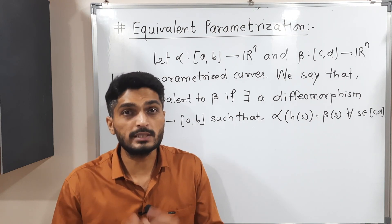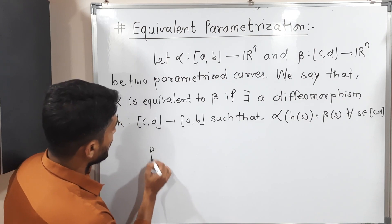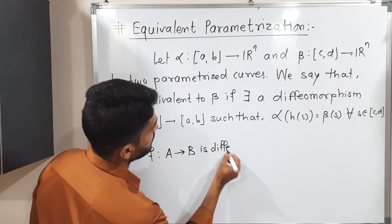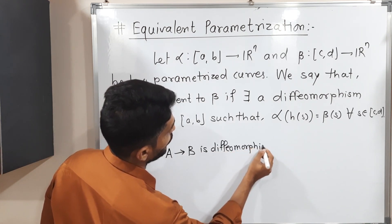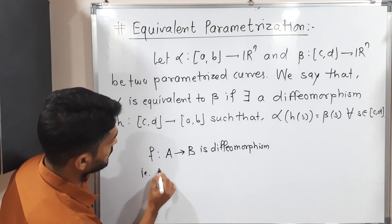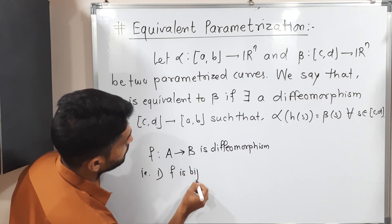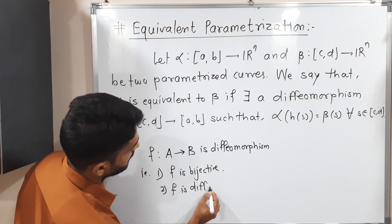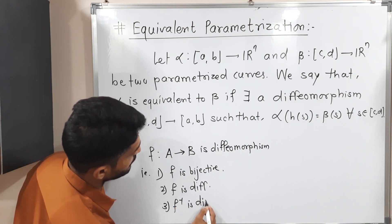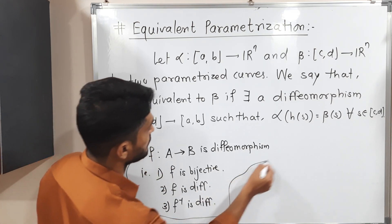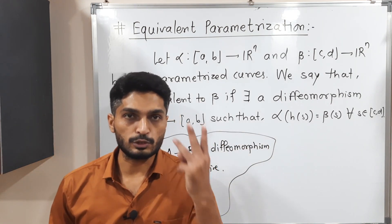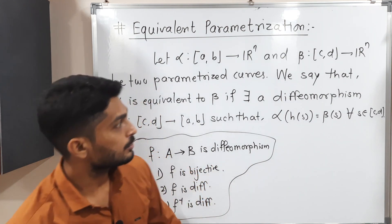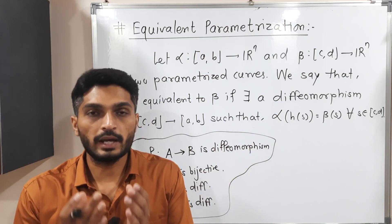You may wonder: what is a diffeomorphism? A function f defined from [a, b] to [a, b] is a diffeomorphism if it satisfies three conditions: first, f is bijective; second, f is differentiable; and third, its inverse is also differentiable. So when we have such a function h satisfying these conditions, we can say alpha is equivalent to beta.